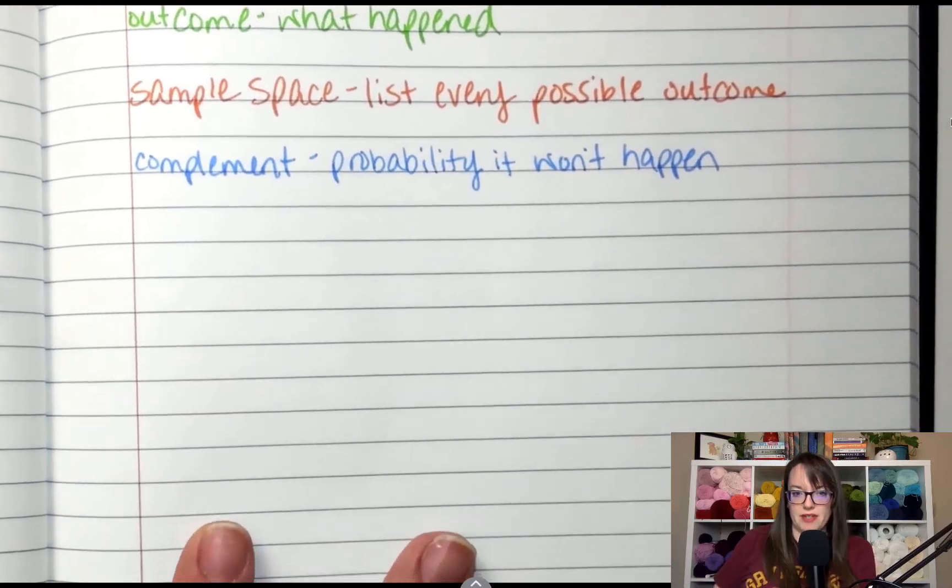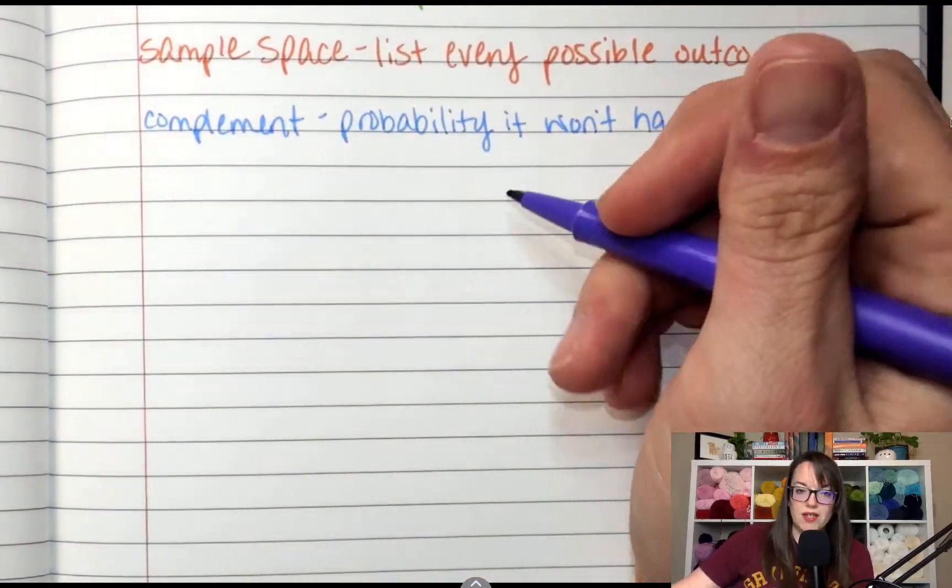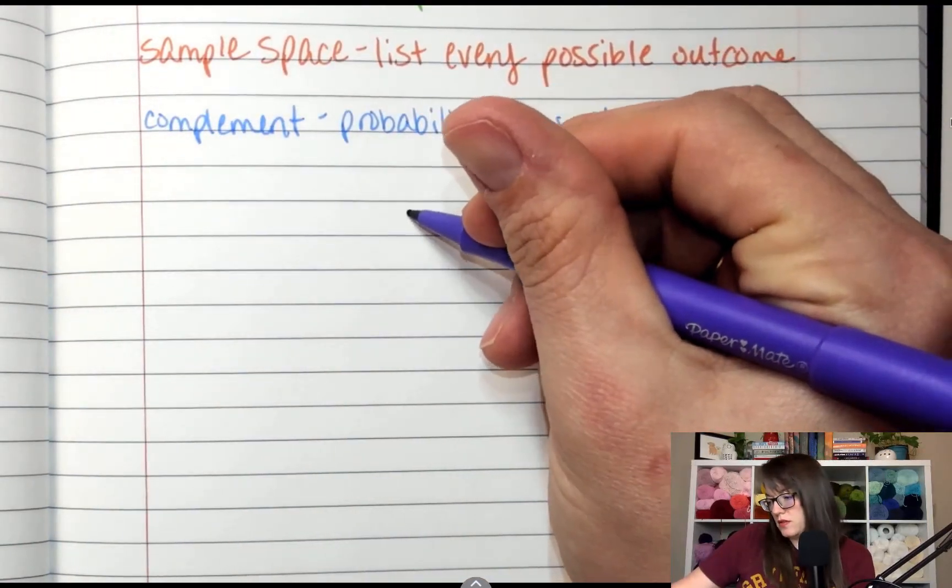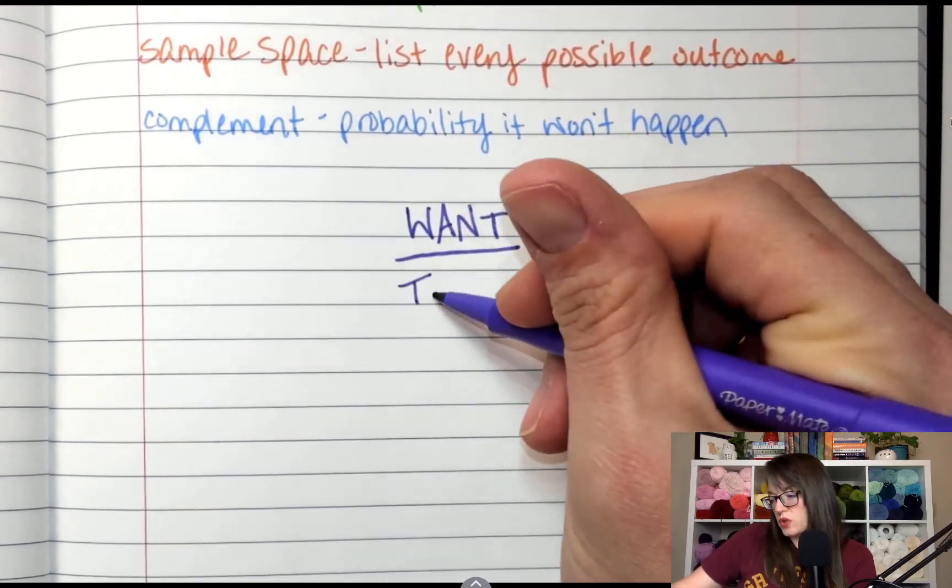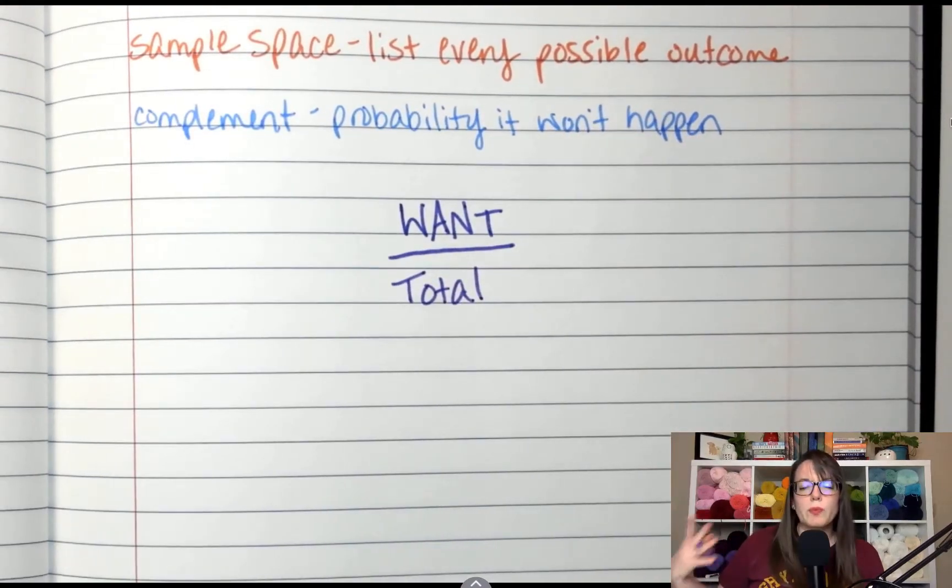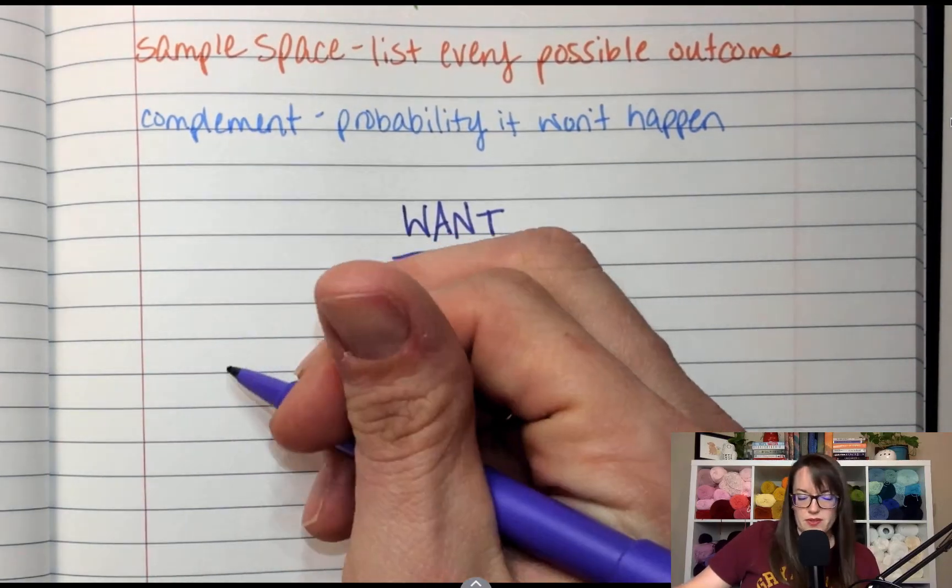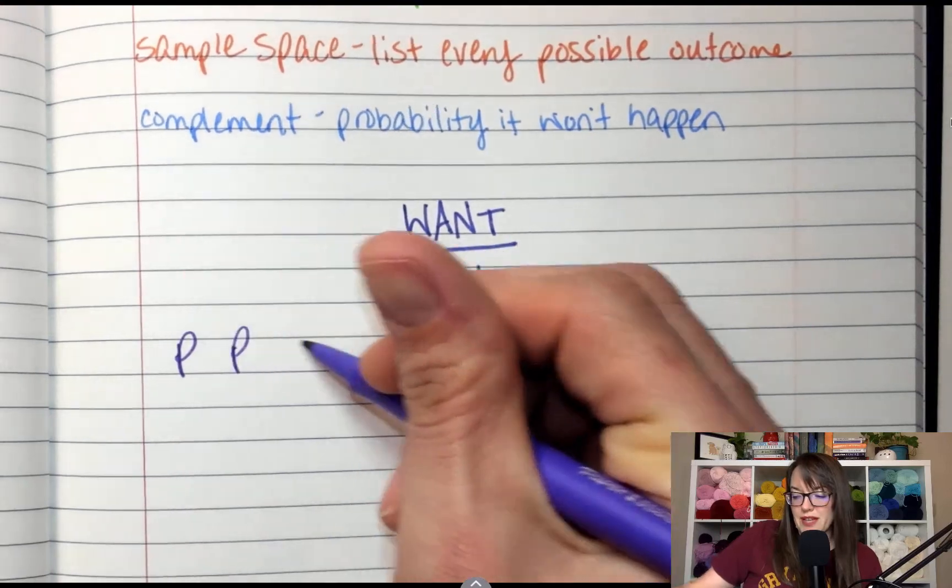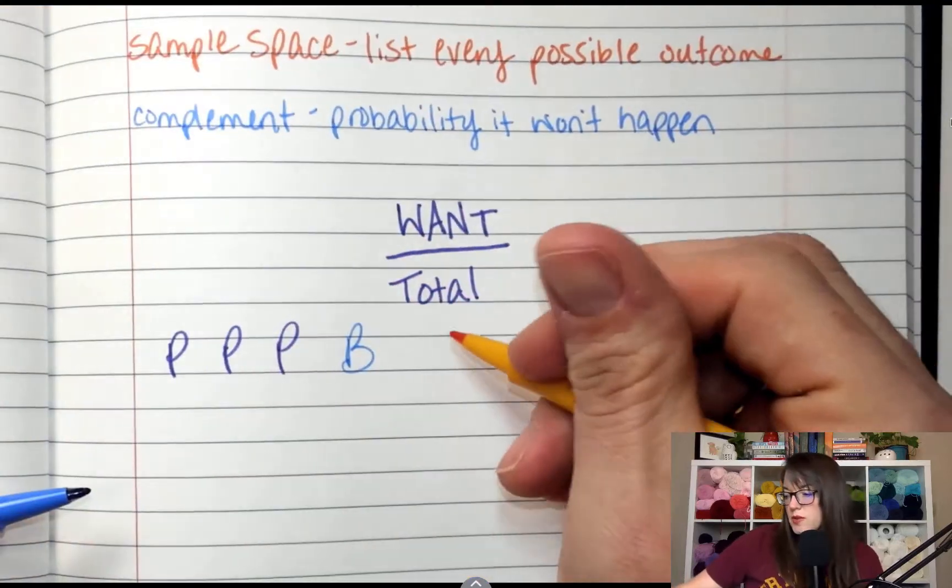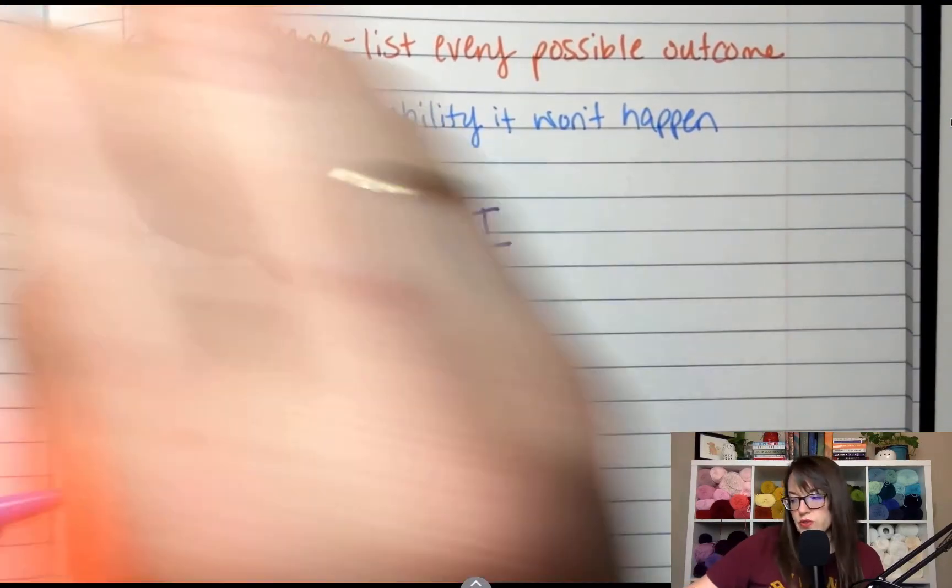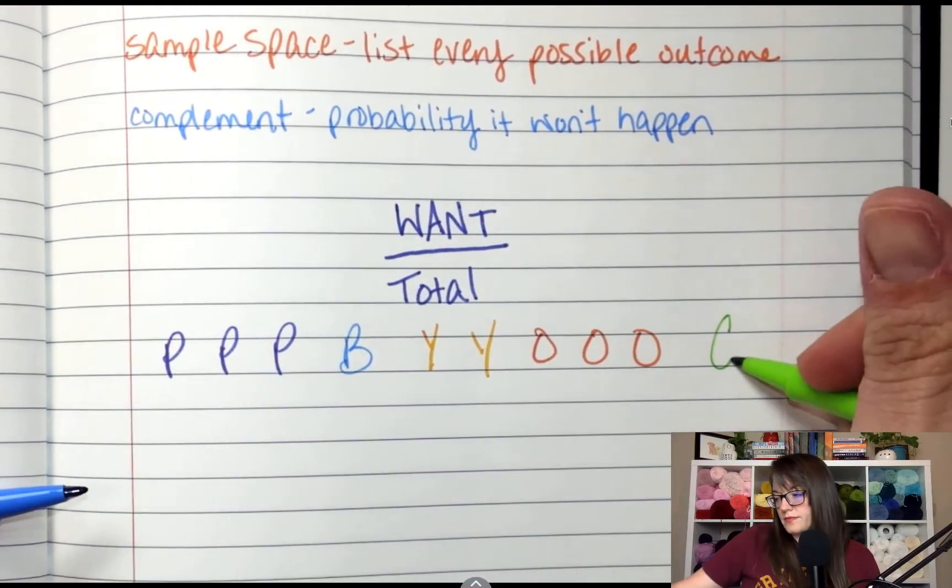All right. Now let's dive into the math parts of this. When we deal with probability, we look at what we want to happen compared to total outcomes or total possibilities. So if I have, we're just going to make a sample. So purple, purple, purple. Like if I had marbles. And then a blue one. And then yellow, yellow. Orange, orange, orange. And green.